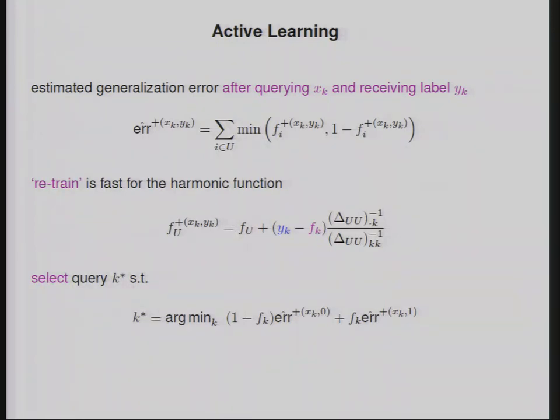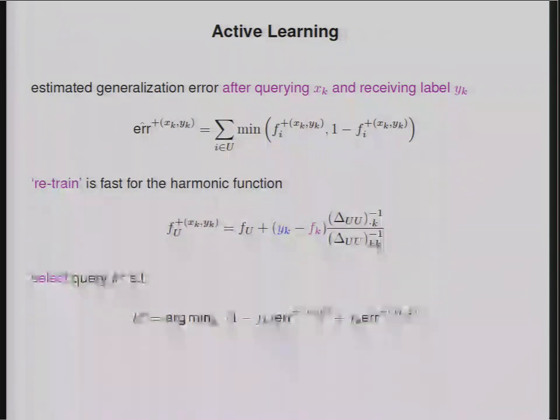Now what I need to do for active learning is to figure out what's going to happen to my estimated generalization error if I obtain the label on the kth point. How valuable is that kth point to me? This is the estimated generalization error after querying the kth point and observing label yk. That's given by this. What I have to do there is recompute the function values at all of the unlabeled points after querying that point. This involves essentially retraining the model under the assumption that I observe the label on the kth point.